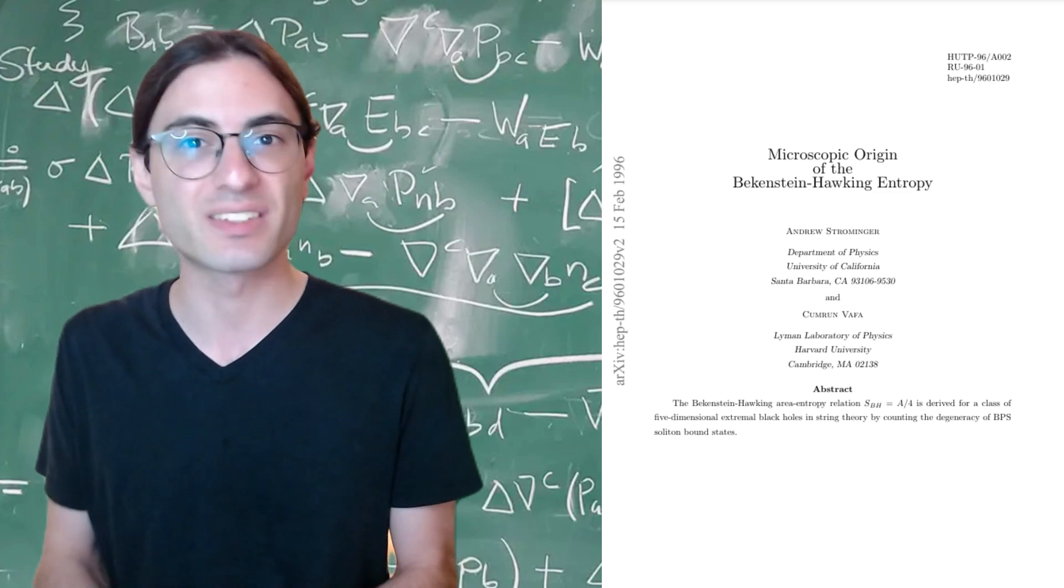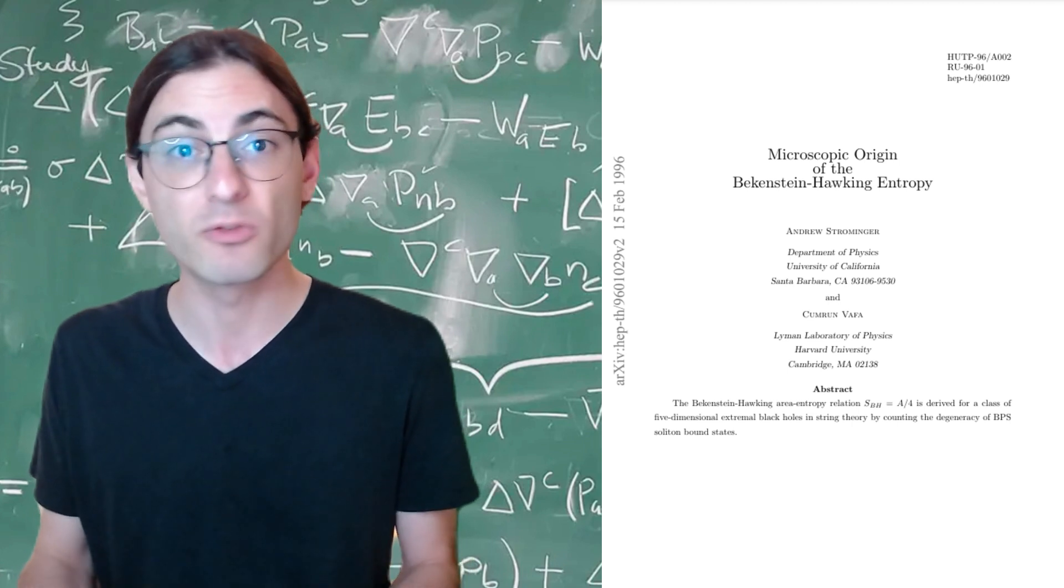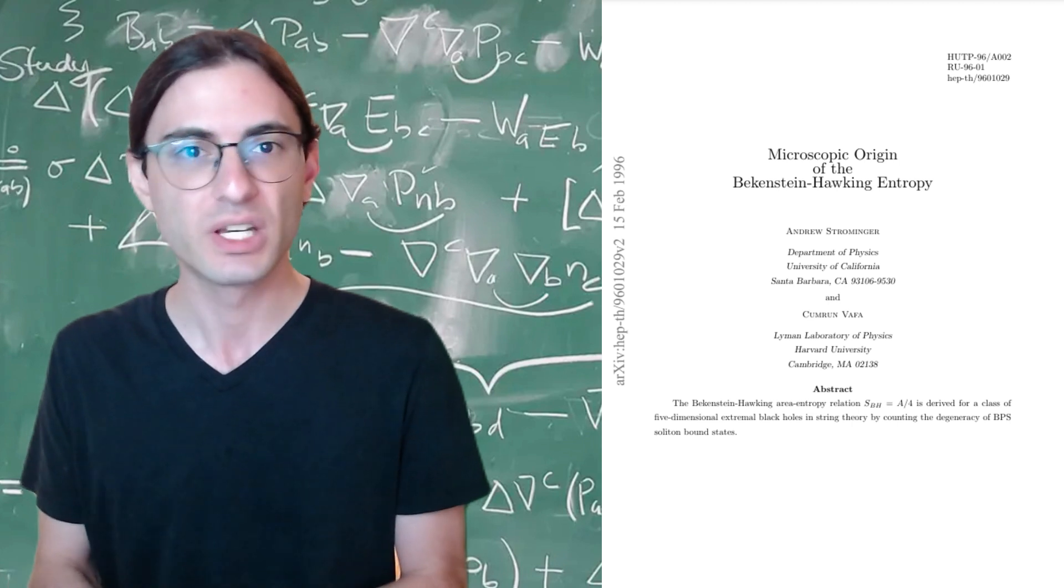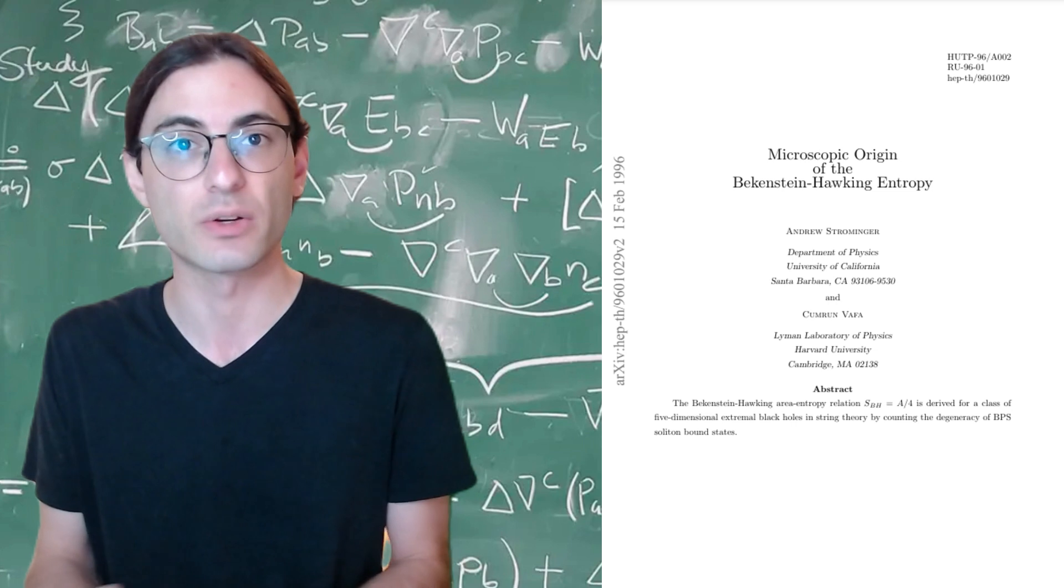What this implies is that the result obtained by Hawking in the 70s is fundamentally linked to some feature of quantum gravity, even if string theory isn't the right one for our universe. And so we should use the ability to derive this result as a litmus test for candidate theories of quantum gravity.